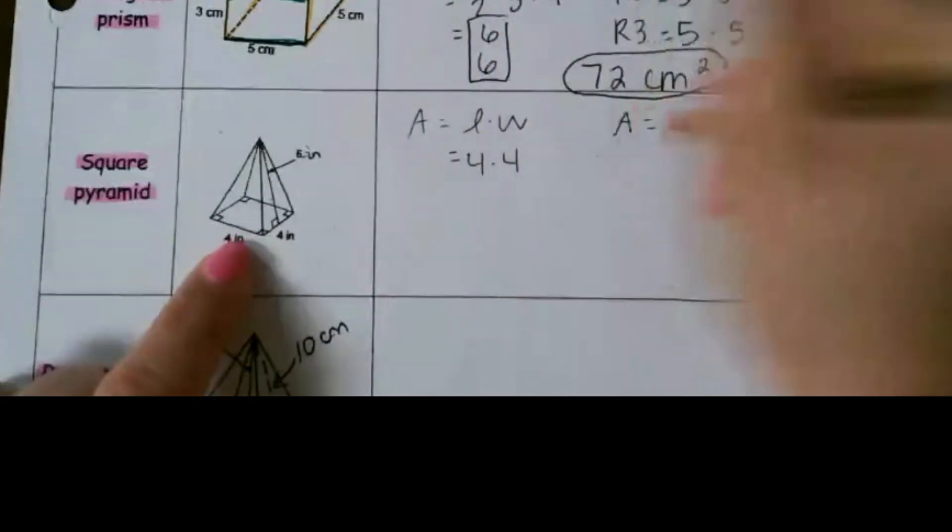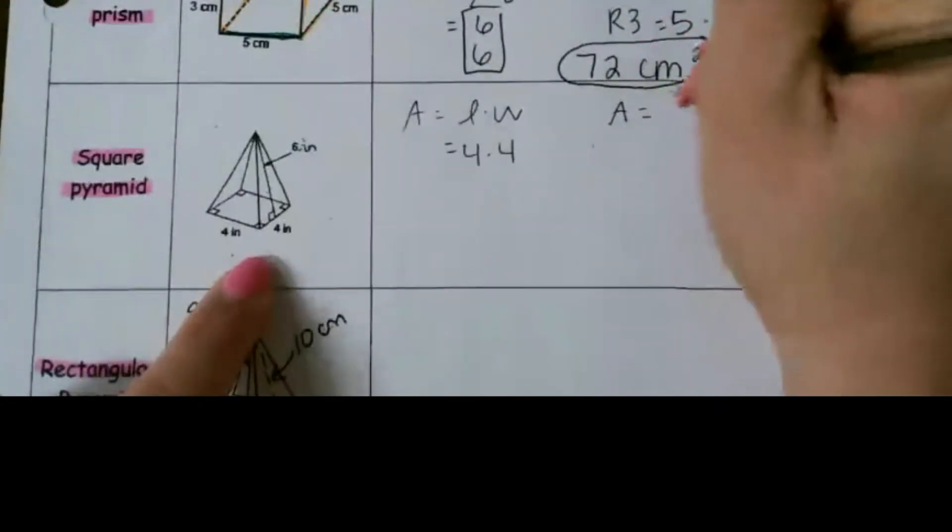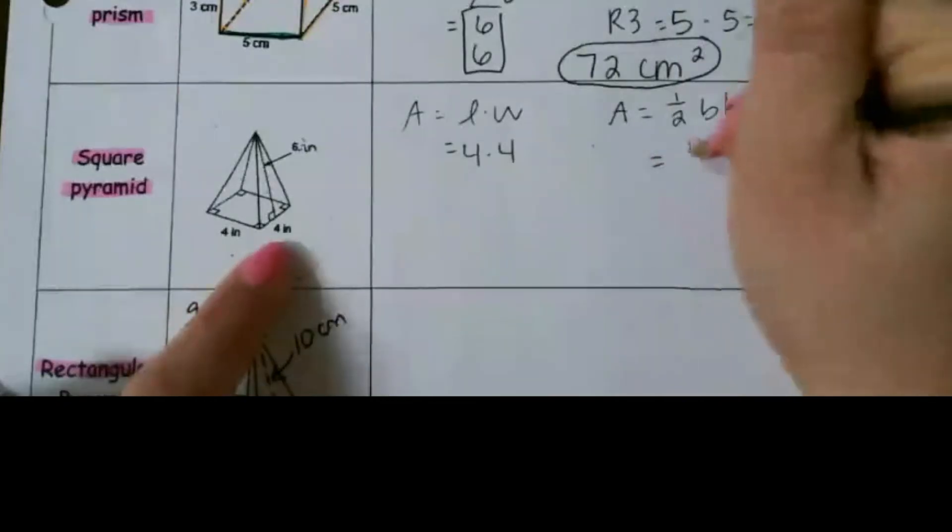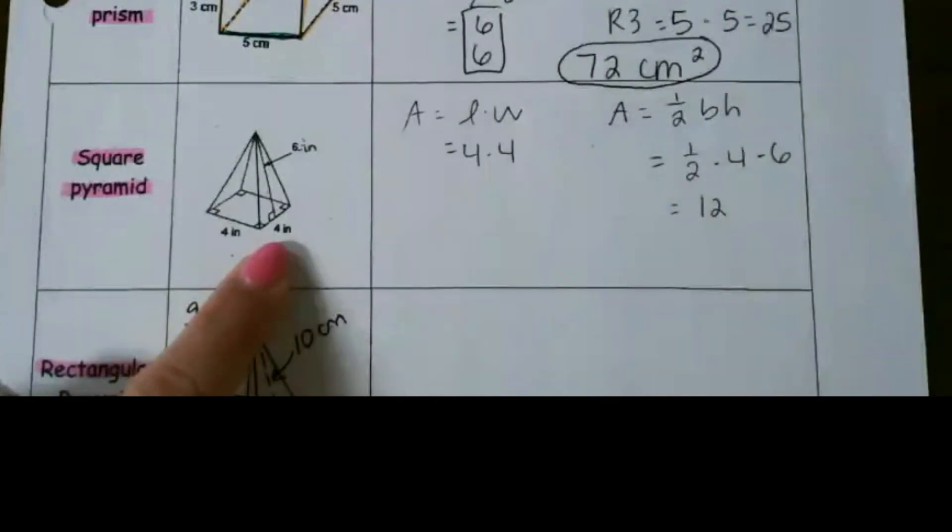Then we need to find the area of our triangle. Since the base is a square, all four of our triangles will be the same, which is 1/2 base times height. The base being 4, and the height being 6. That's going to give us 12.